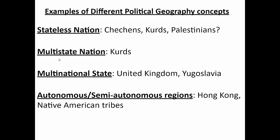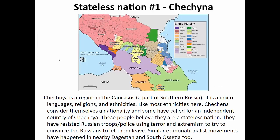We're going to look at some other terms: stateless nation — examples include the Chechens, Kurds, and Palestinians. Then multi-state nation — using the Kurds again. Multinational states like the United Kingdom and Yugoslavia. And finally, autonomous or semi-autonomous regions like Hong Kong and Native American reservations. Let's start with stateless nations — we'll begin with Chechnya as a great example.